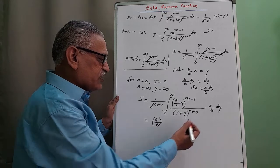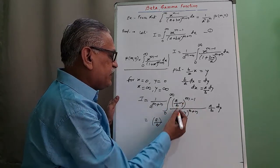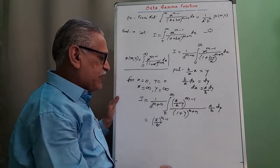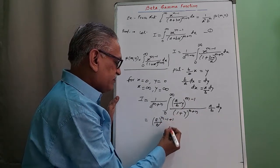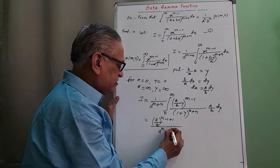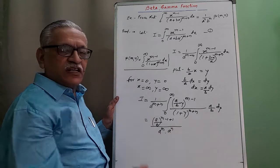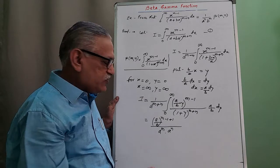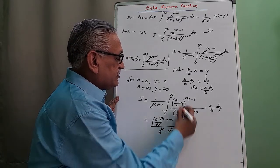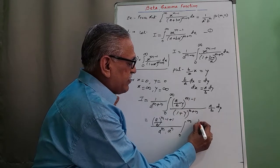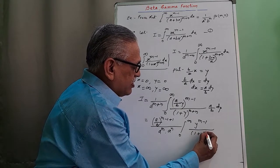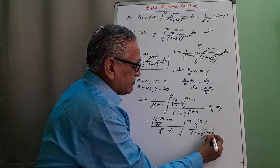Taking all constant terms outside the integration sign, we have (a by b) raised to m minus 1, times another factor of a by b, giving (a by b) raised to m, all divided by a raised to m into a raised to n — splitting a raised to m plus n as a raised to m times a raised to n — times the integration from 0 to infinity of y raised to m minus 1 divided by (1 plus y) raised to m plus n, dy.